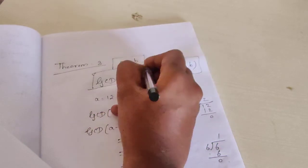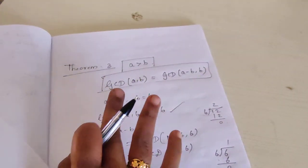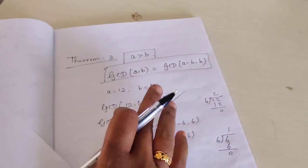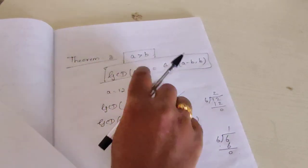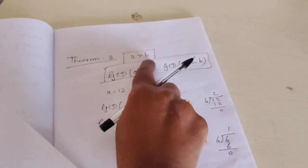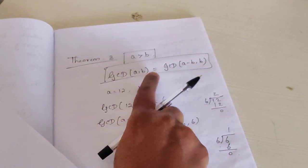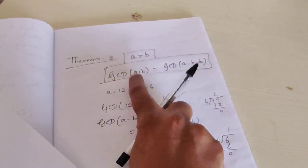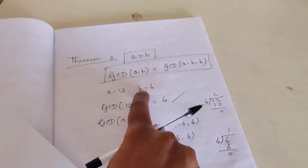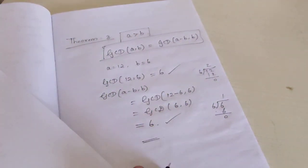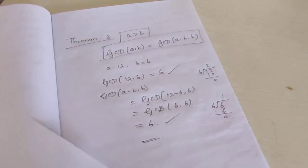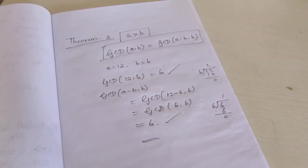You need to learn this theorem with its condition. Three theorems we have learned so far in chapter 2, Numbers and Sequence. Learn the up-to-date portion thoroughly. The condition is A greater than B means GCD(A, B) is equal to GCD(A minus B, B). Complete the homework regularly. Thank you students, have a nice day.